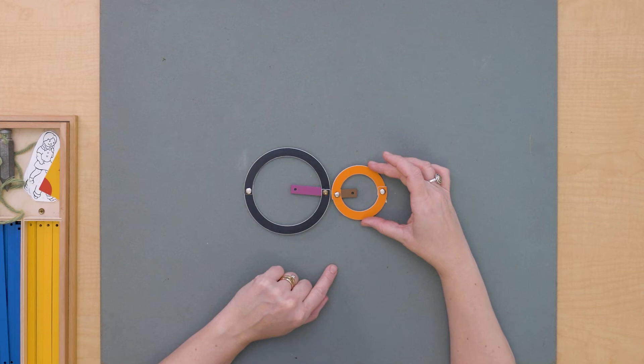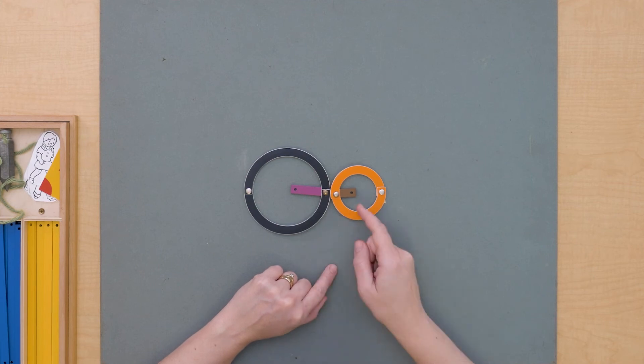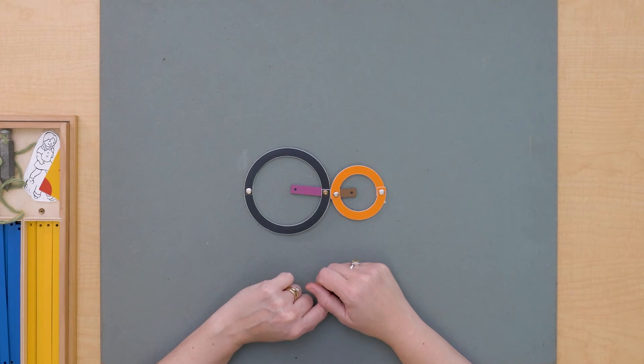But what if I move my circle to be tangent to the other circle? Then what is the distance between the two centers? It's the sum of the radiuses of the two circles. Yeah, absolutely.